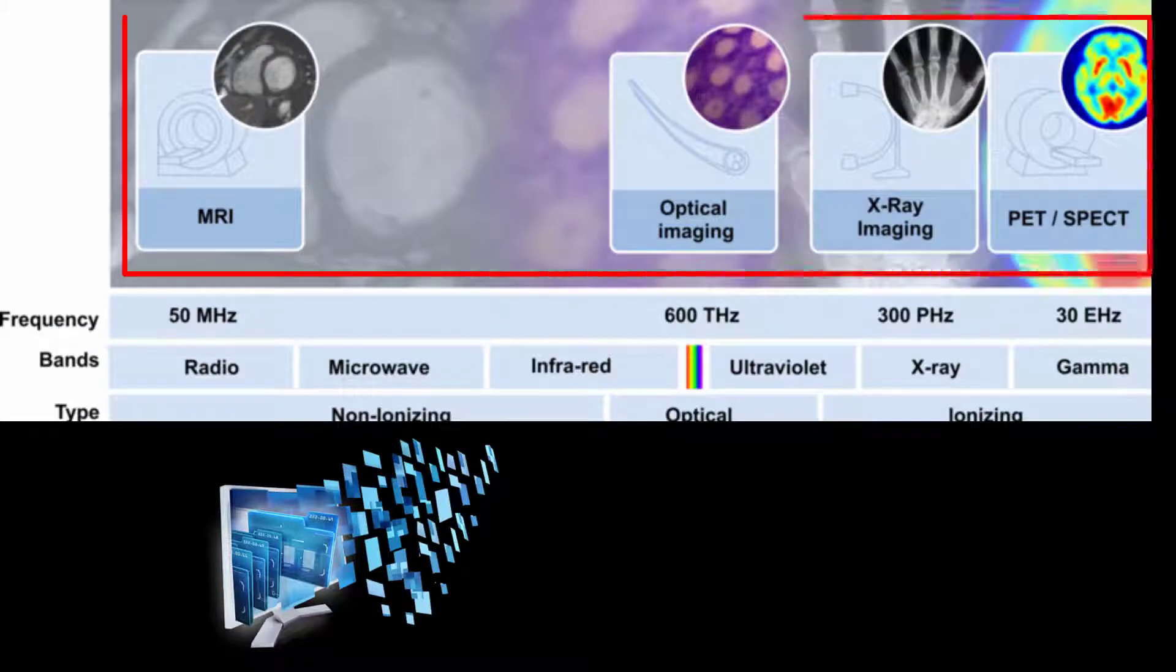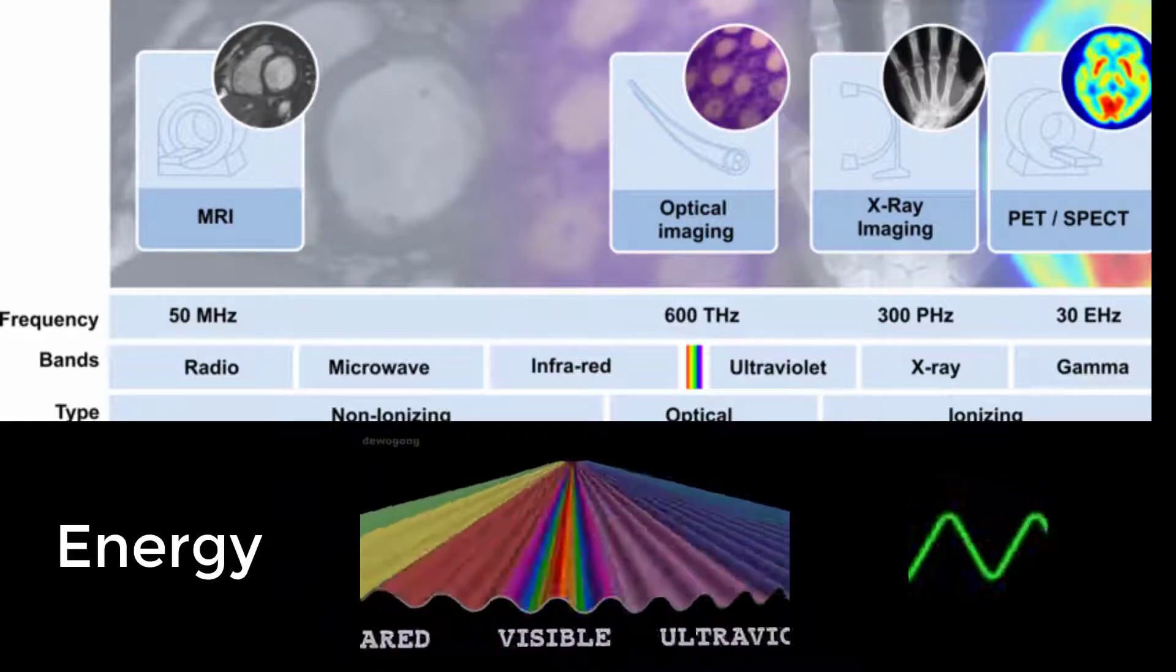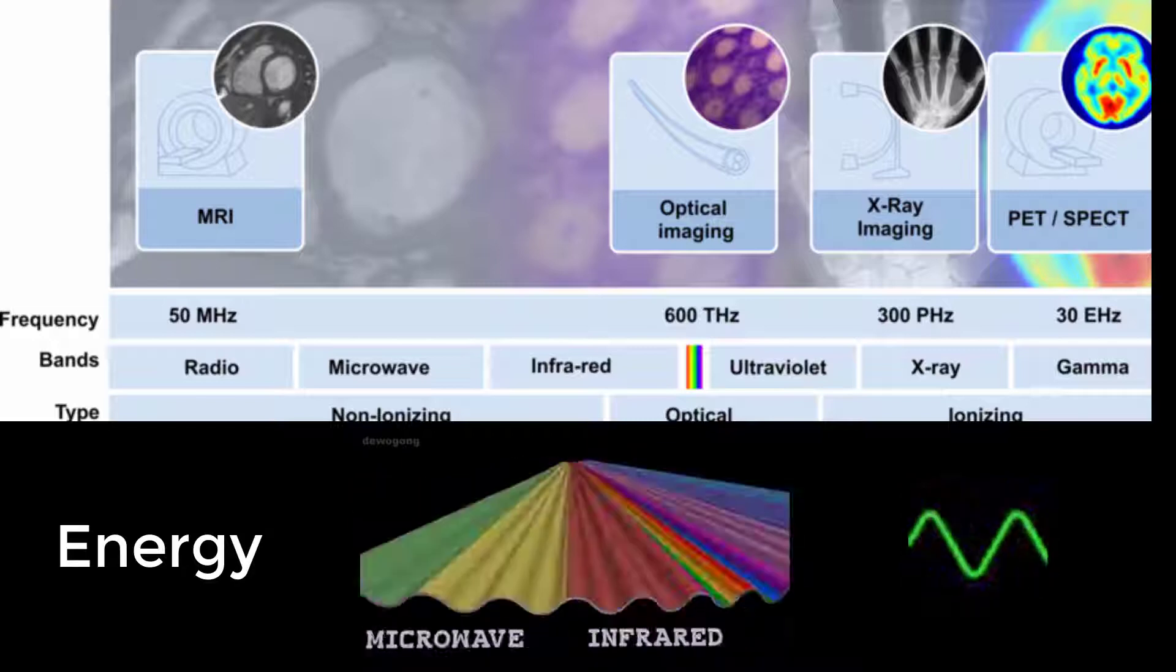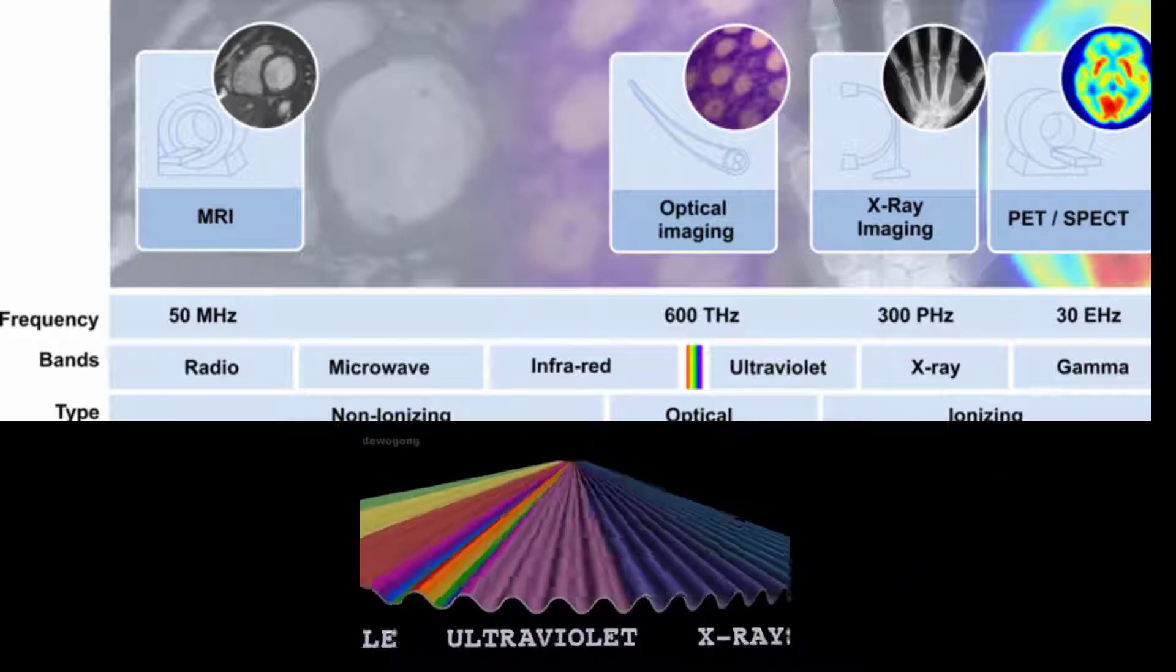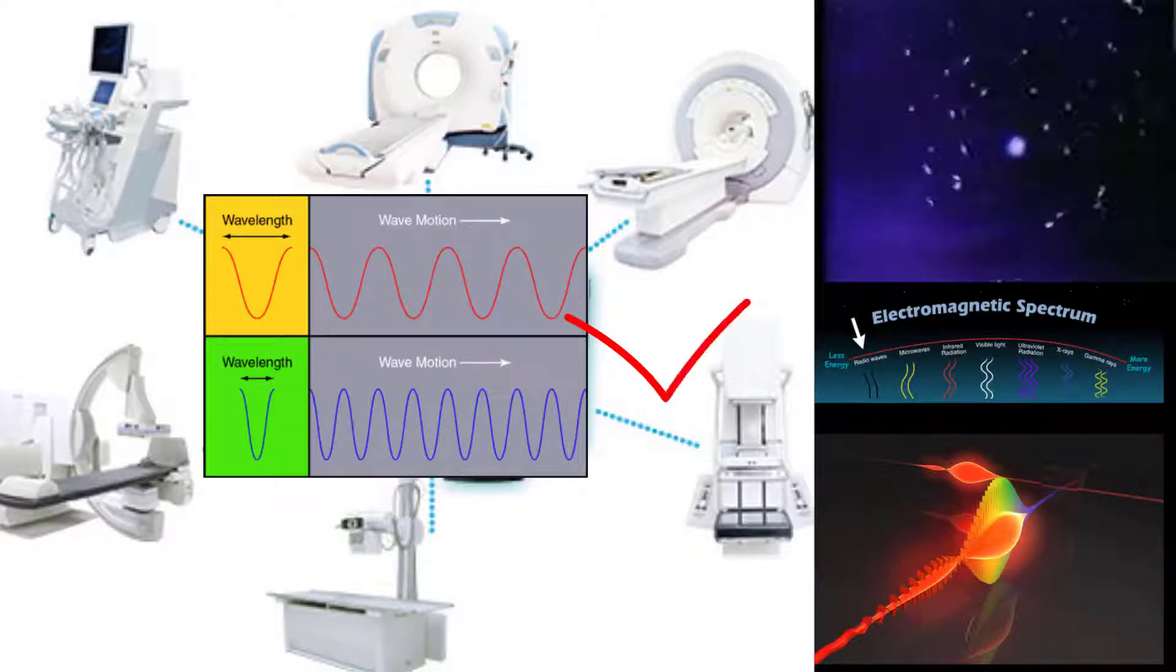All imaging modalities emit energy from the electromagnetic spectrum. The energy produced as an exposure by the different modalities only varies by frequency. It is the use of energy and its interaction with tissue that allows us to create digital images.